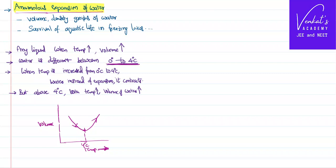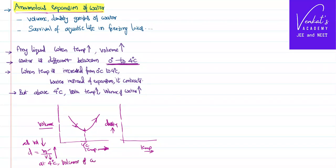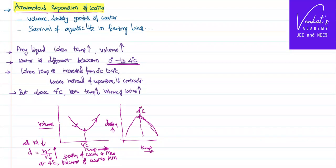Similarly, if you draw a density graph — temperature on the x-axis, density of water on the y-axis — when you rise the temperature from 0 to 4, as volume decreases, and since the density formula is mass divided by volume, mass remains constant and the denominator decreases, so the total fraction increases. So at 4 degrees centigrade, volume of water is minimum, and density of water is maximum. You will get exactly a reverse graph for density — at 4 degrees centigrade, density of water becomes maximum.